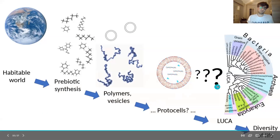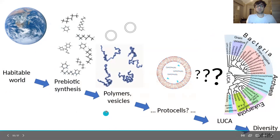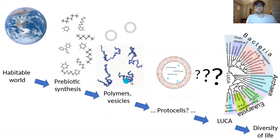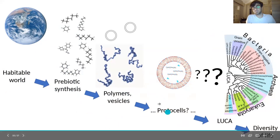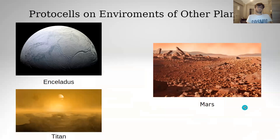To conclude, this is our history. In the habitable world, prebiotic chemistry happened, and with this, polymers and vesicles were formed. They formed protocells, and these protocells triggered LUCA — the Last Universal Common Ancestor, the first ancestor.